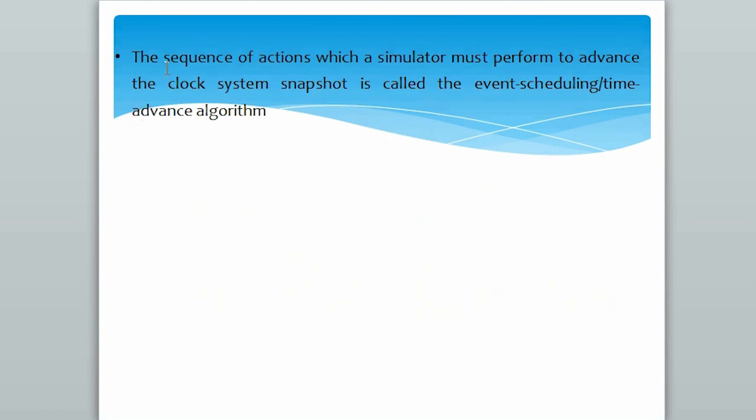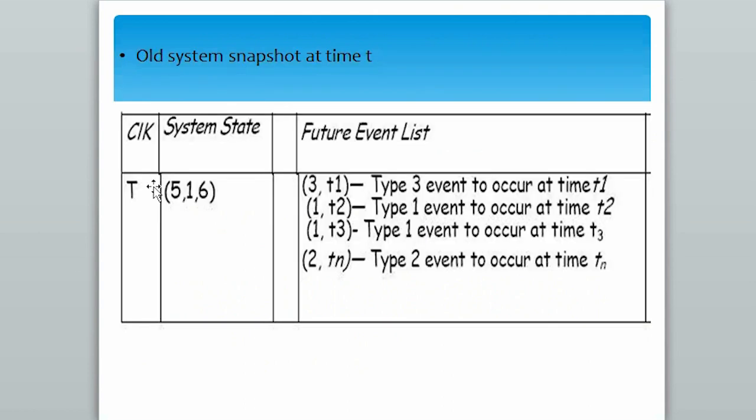Coming back to the definition of the algorithm, we can say that this is the sequence of actions which a simulator must perform to advance the clock system snapshot. Let us take a look at the old system snapshot at time t. Here we can see that the future event list has four events occurring at different time parameters: t1, t2, t3, and tn.